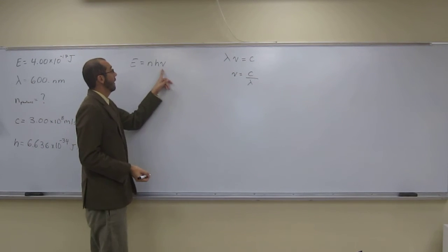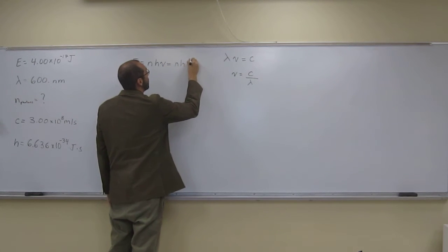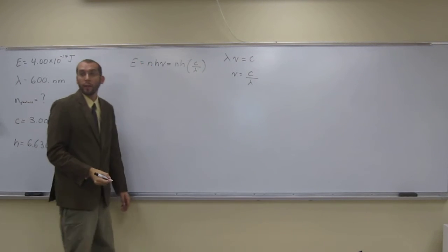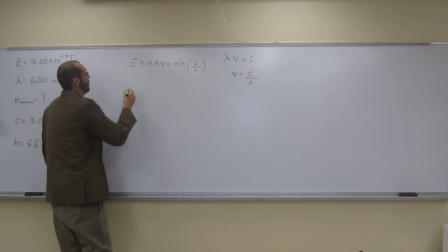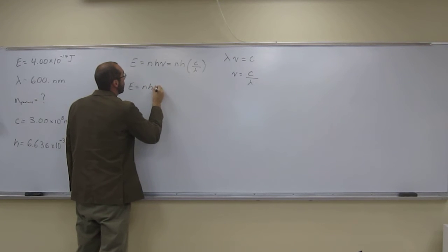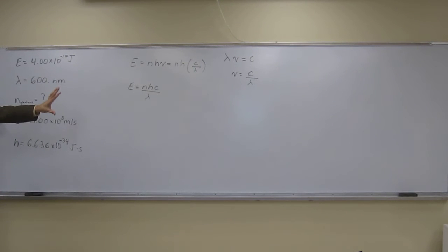So, now we can plug that in for this. So, we're going to have n h c over lambda. Like that. Is that okay? Yes. Okay. So, now, let's just write this equation out. So, E equals n h c over lambda. Like that. Okay?